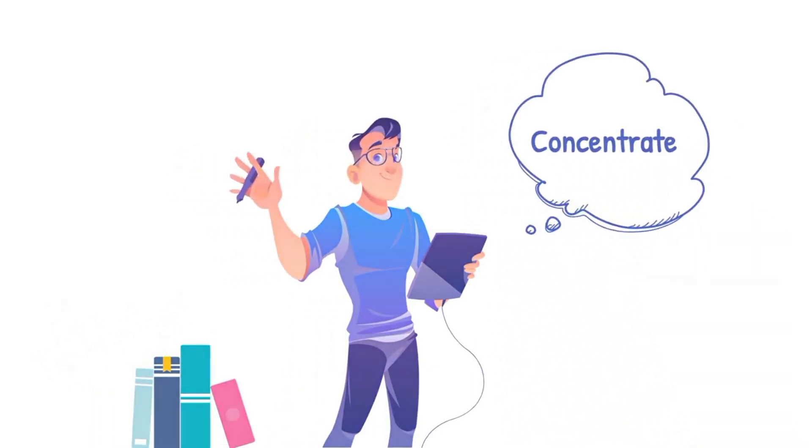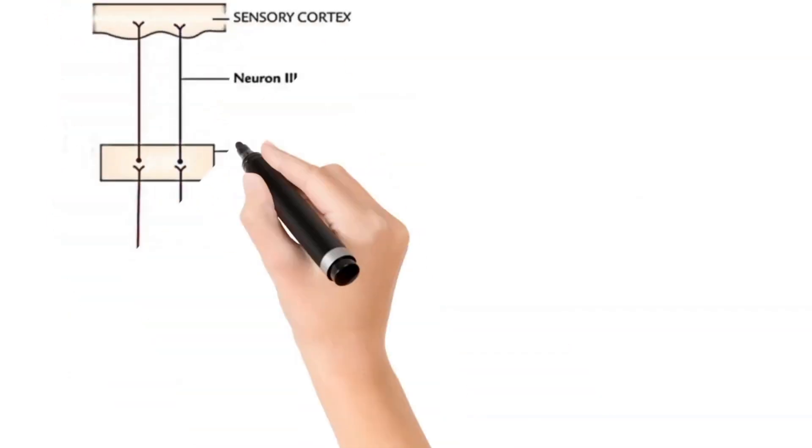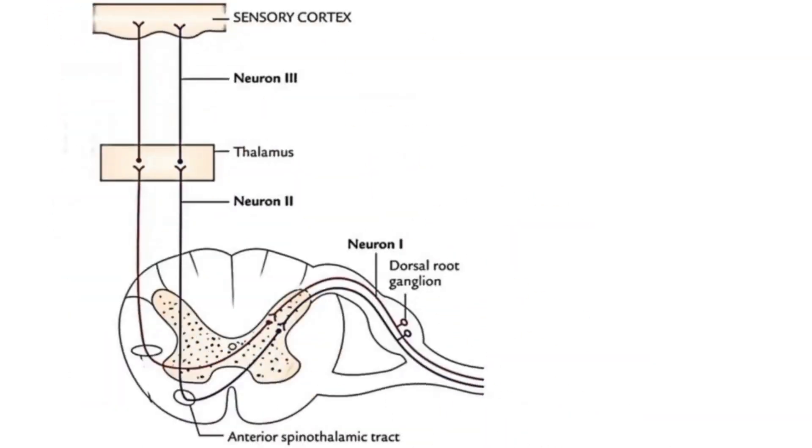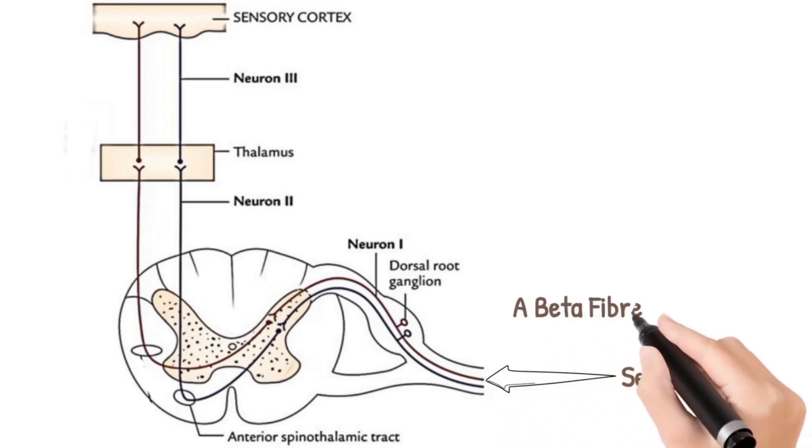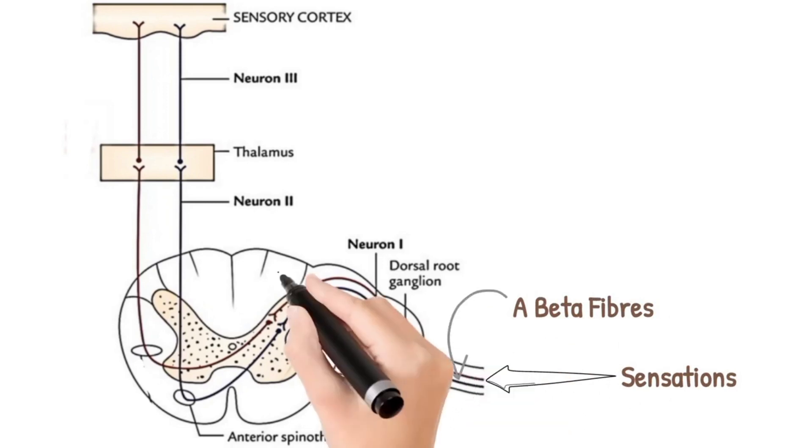Now we will discuss the pathway of the anterior spinothalamic tract. The sensations of crude touch and pressure from the skin are carried by the dorsal root to spinal cord. These sensations are carried by type A beta fibers. These fibers synapse in the dorsal horn in substantia gelatinosa.